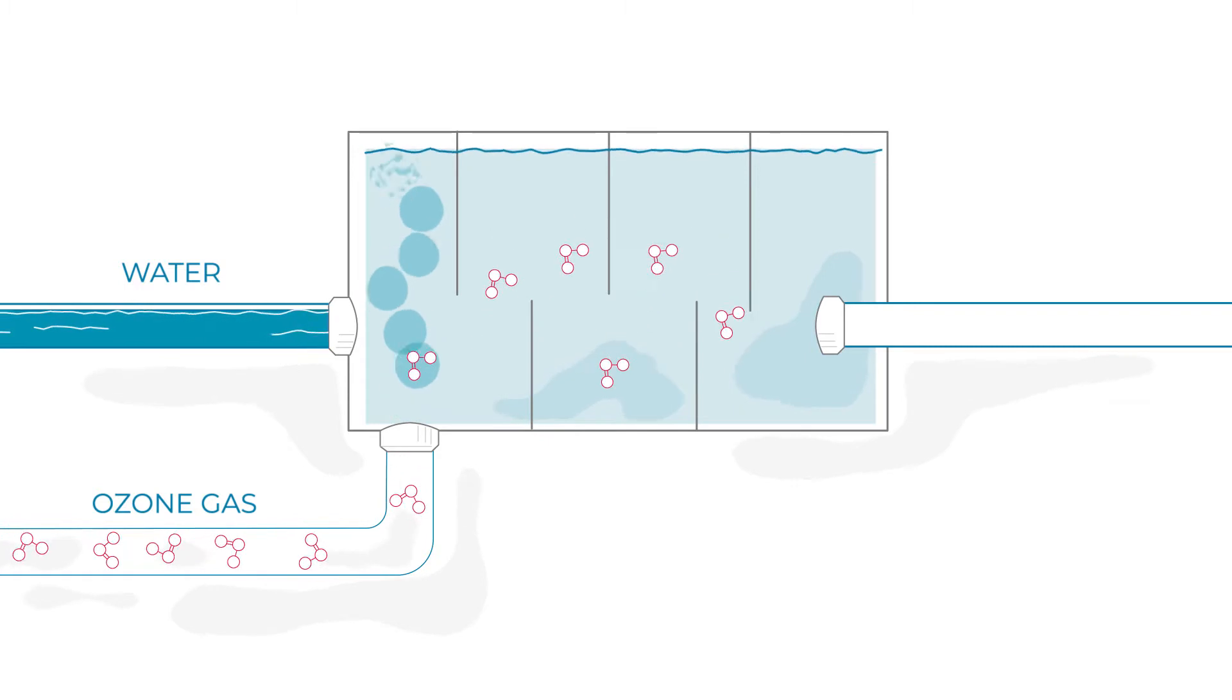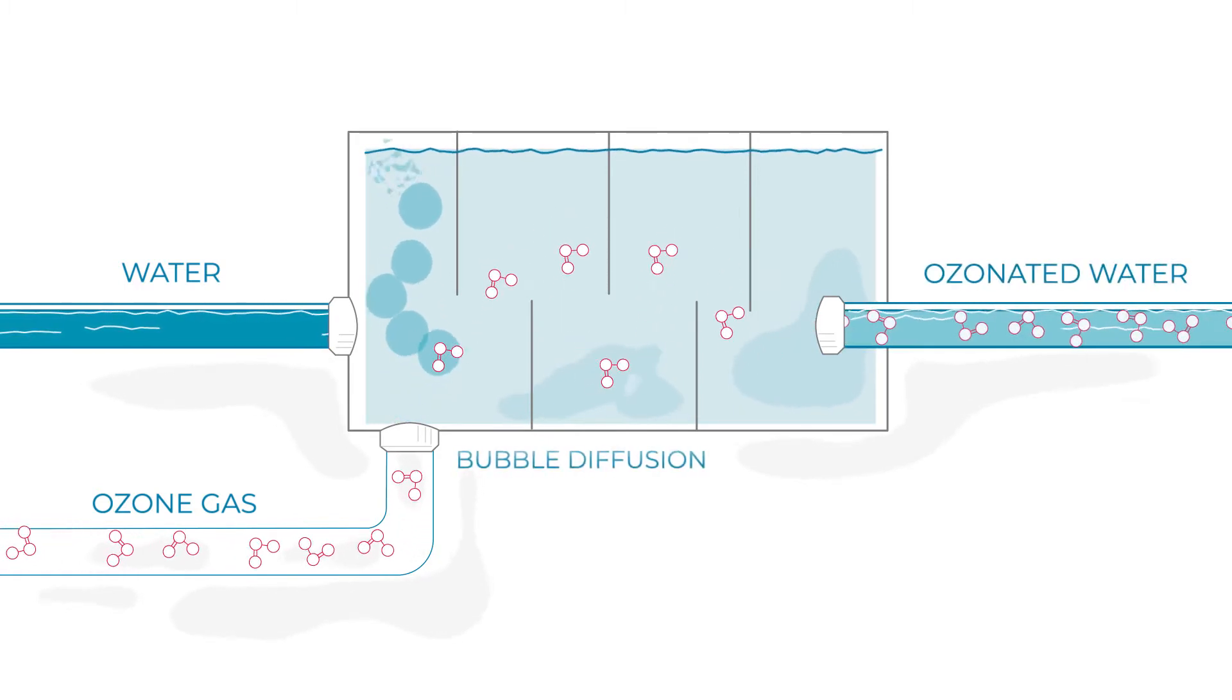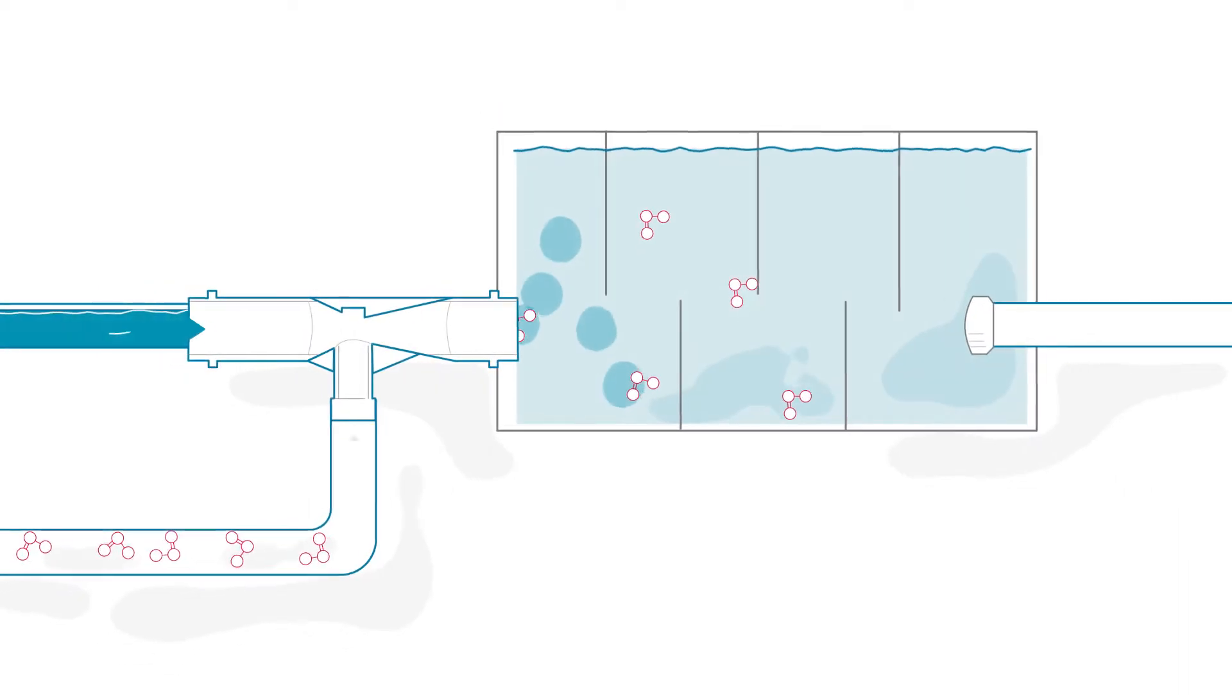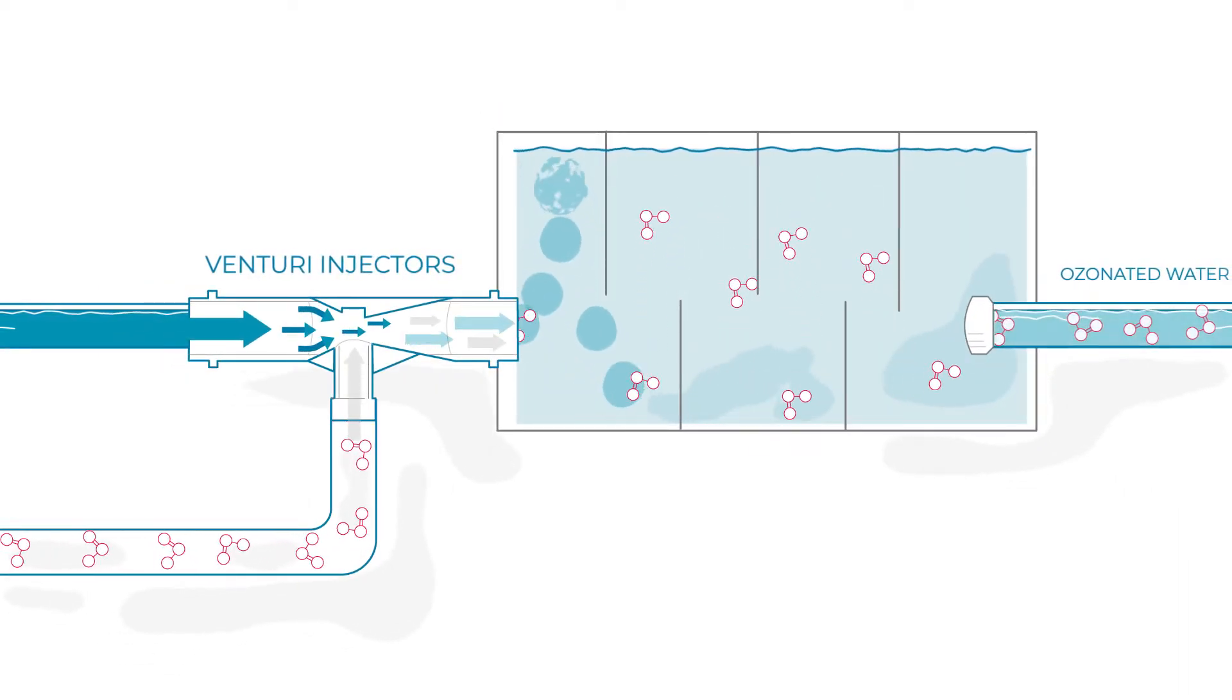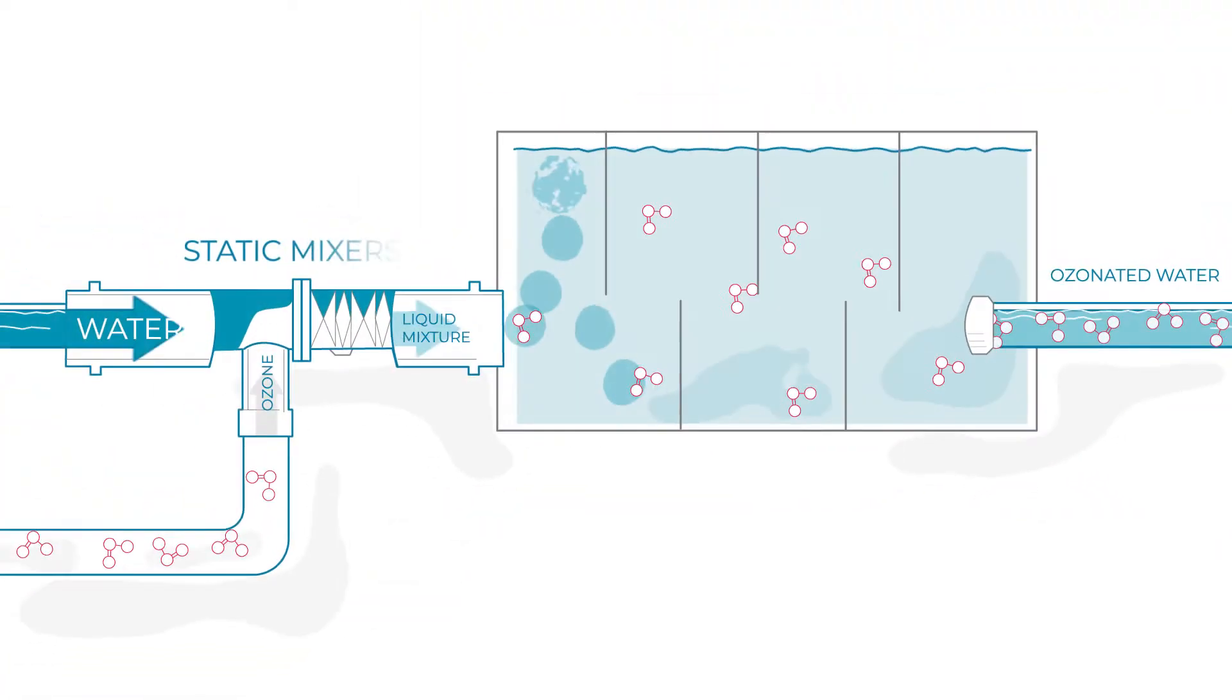Efficient transfer from gas to liquid can be achieved using techniques like bubble diffusion, Venturi injectors, and static mixers.